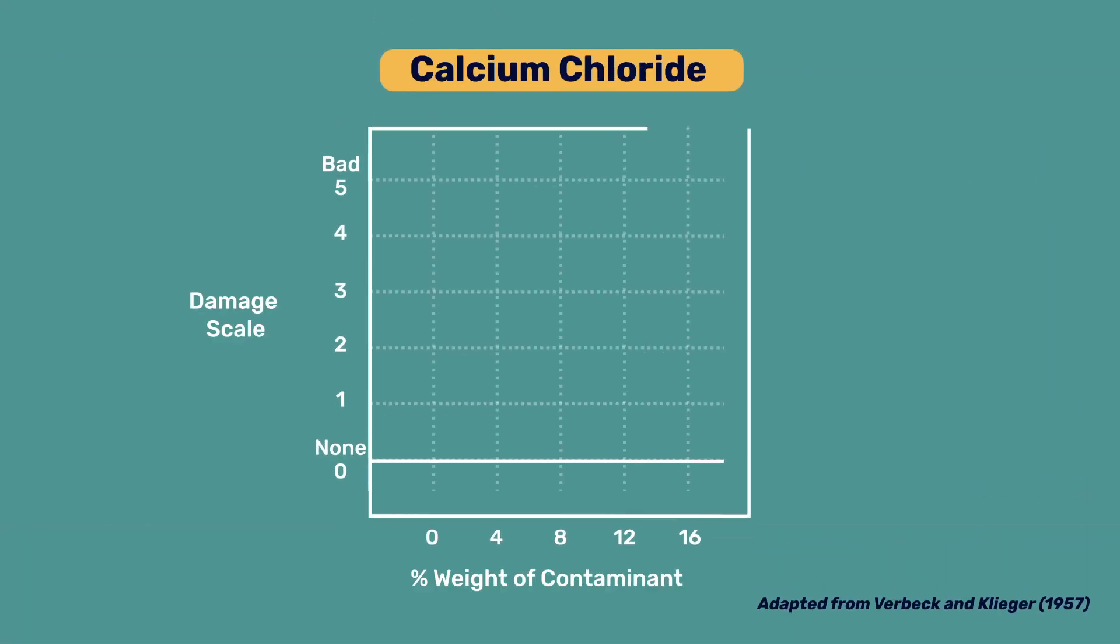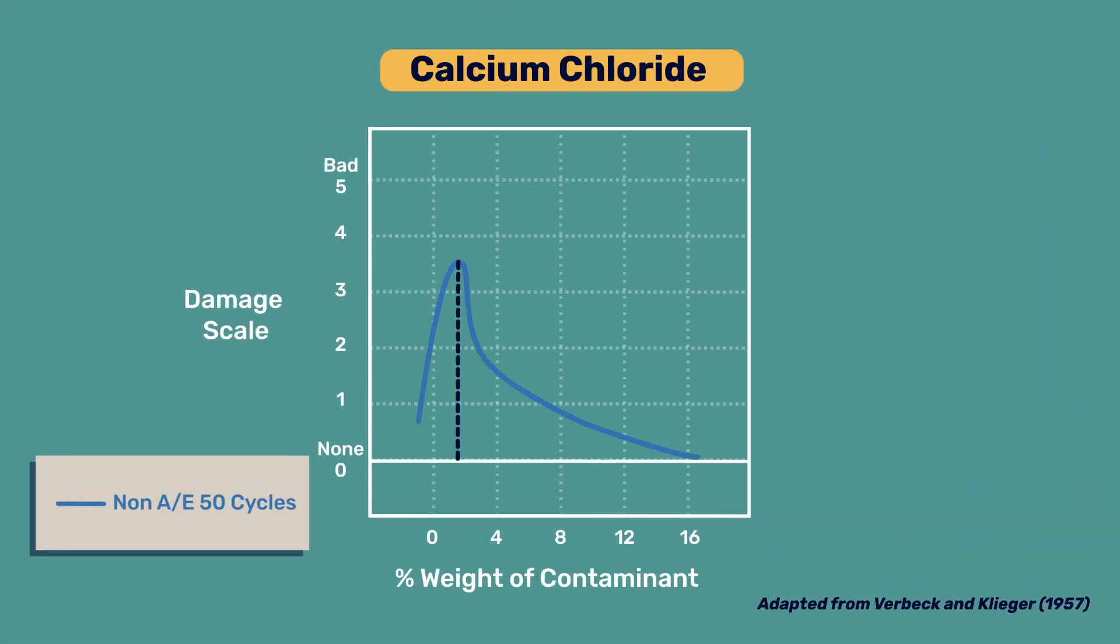This is shown here for calcium chloride, where damage worsens up to concentrations of about 3%. Beyond that point, the damage decreases again as the salt concentration increases. Such situations are defined as having a pessimum, meaning a worst-case scenario exists with respect to the salt concentration.